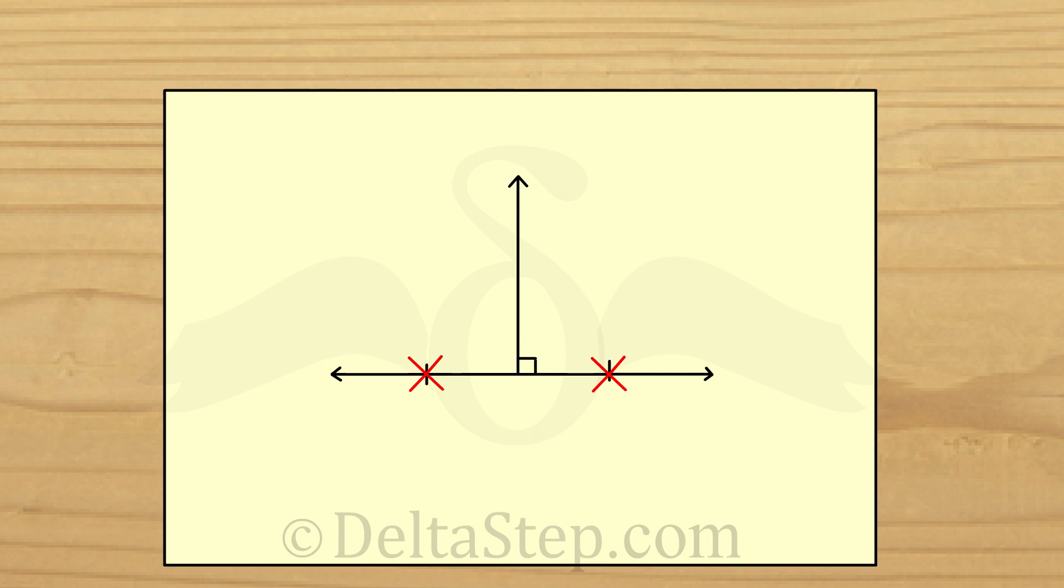But we know that a line extends indefinitely in both directions. That is, it goes till infinity. Thus we do not know the actual length of the line. So there is no way in which we can know the half of the measure of a line. So we cannot bisect a line.